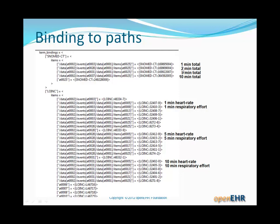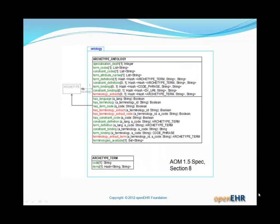That LOINC code there is bound to the two-minute total. One-minute total and two-minute total are pre-coordinations — that's what's going on in these codes — whereas the archetype is doing essentially a kind of post-coordination by coordinating the one-minute or two-minute with total, heart rate, respiratory effort, and so on. For completeness, the archetype ontology class UML from the AOM spec shows data structures corresponding to term definitions — a hash of hashes of archetype terms. You don't need to be worried about this at this stage; the corresponding data structures are actually very simple.